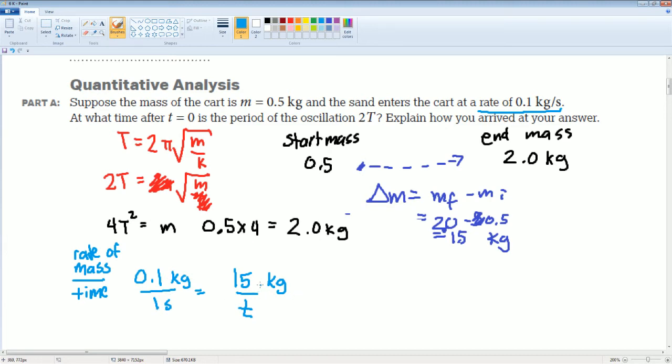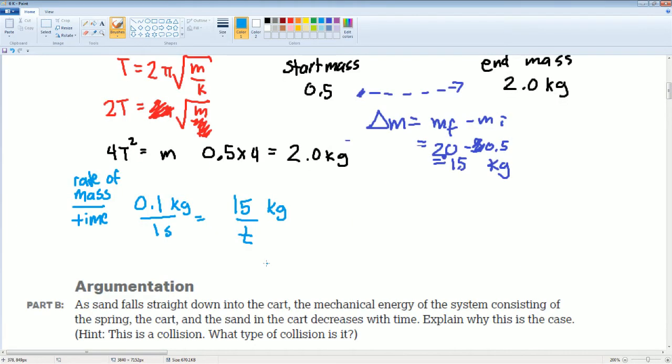over the time. Likewise here, you gain 0.1 kilograms in one second. How much time do you need to gain 1.5 kilograms? So here you can cross multiply. So t is equal to—0.1 equals 1.5 kilograms, then you want to divide this over.